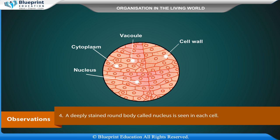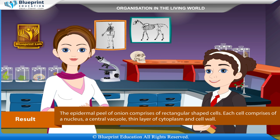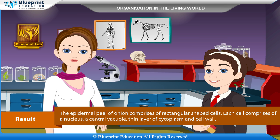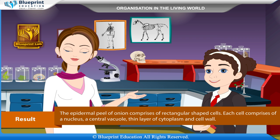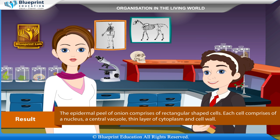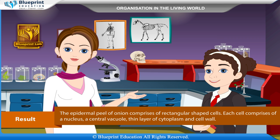A deeply stained round body called the nucleus is seen in each cell. Result: The epidermal peel of onion comprises rectangular shaped cells. Each cell comprises a nucleus, a central vacuole, a thin layer of cytoplasm, and a cell wall.